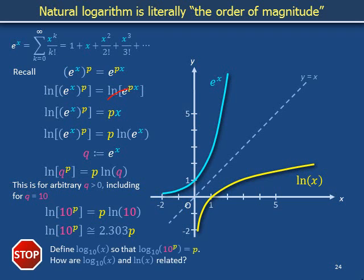Please define the symbol log base 10 on x so that log base 10 on 10 to the p equals p. There is no factor 2.303, just precise equality. Can you relate log base 10 on x with the natural log on x? The answer is not provided in this video.